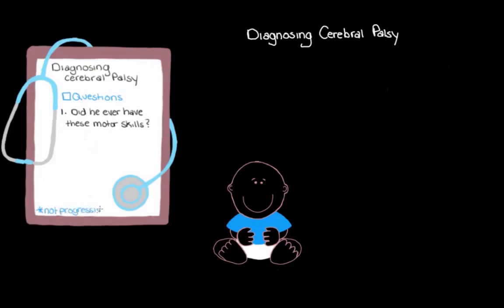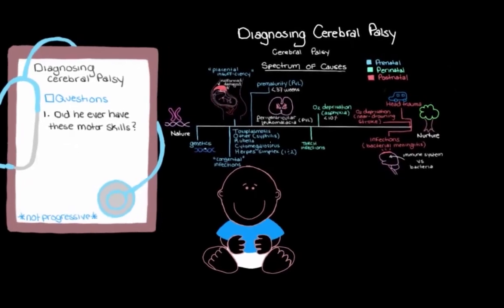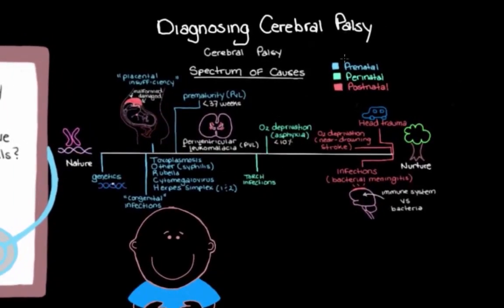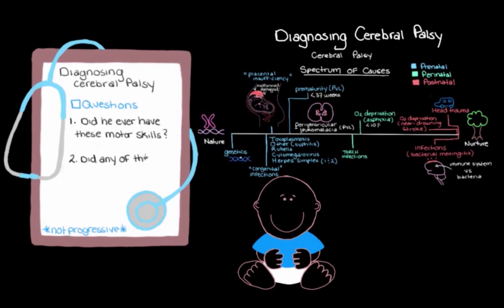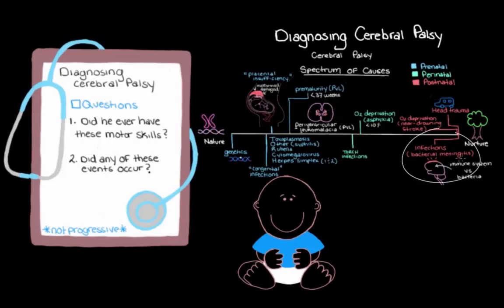There are quite a few things that can cause cerebral palsy. We'll want to check whether mom or the child experienced any relevant events during pregnancy, birth, or shortly after birth — such as maternal infection during pregnancy, premature birth, or an infection like bacterial meningitis just after birth. These sorts of events can cause cerebral palsy, so finding out if any occurred makes us more or less suspicious of the diagnosis.